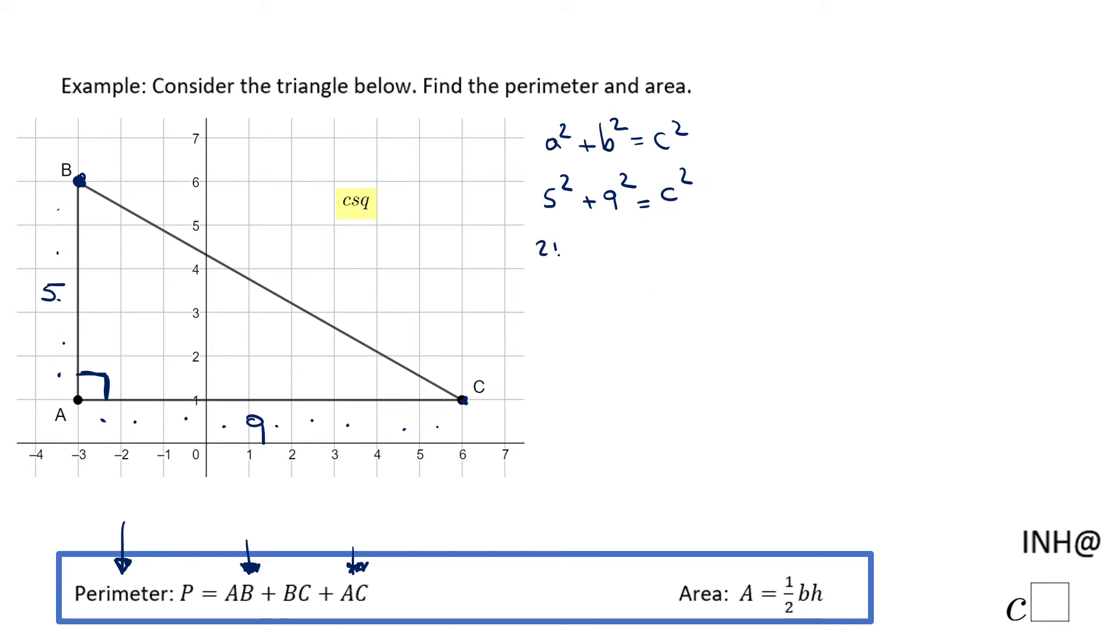And that will be c². 25 plus 81 is 106 equals c². So c will be square root of 106 which cannot be simplified. Remember, this c in our case in this Pythagorean formula is nothing else than the side BC of this given triangle.